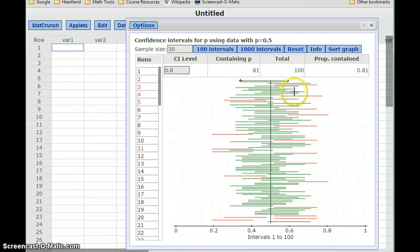And now we're going to see a lot more red bars, a lot more confidence intervals, ranges of values that failed to capture that true population proportion. But we still have about 81% of the time confidence intervals that do capture that true population proportion.